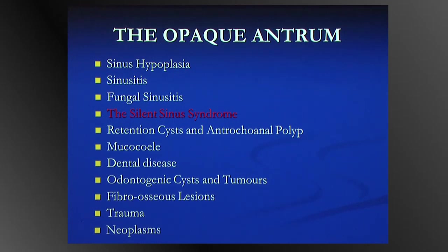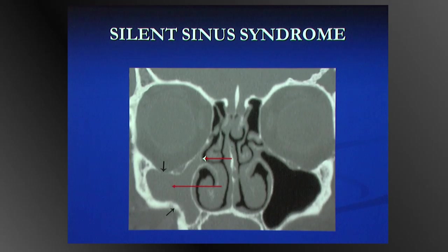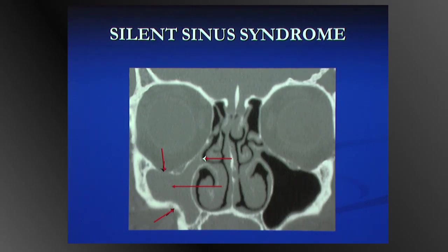The silent sinus syndrome is an interesting syndrome. Chronic sinus disease may produce bony changes, most commonly sclerosis, but the walls can sometimes be sucked in. What happens is you get a completely opacified antrum; the uncinate process gets sucked laterally to the inframedial orbital margin, the ostium and infundibulum is occluded, the margins get retracted in. This results in an increased cranial-caudal distance of the orbit and enophthalmos. These patients present with facial asymmetry and/or diplopia, and the sinus disease is relatively silent.